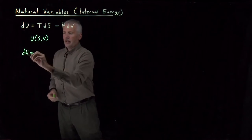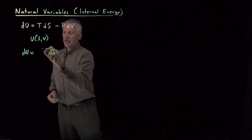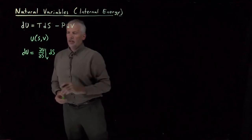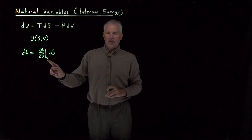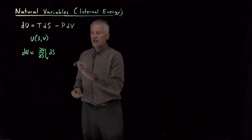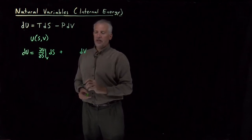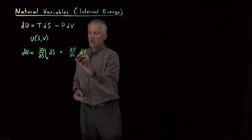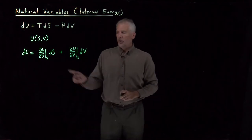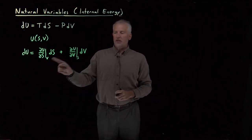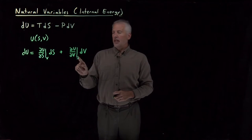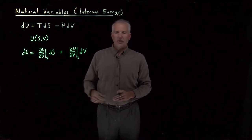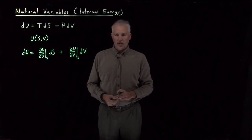The change in u is going to come from some change in S, and then the energy will change at some rate as I change the entropy — (∂u/∂S) at constant V, times dS. It will also have a contribution from changing the volume: the energy changes as I change the volume at constant S. Change S and leave V constant, or change V and leave S constant — either one affects the energy. Add those two together and you get the total differential for the internal energy.